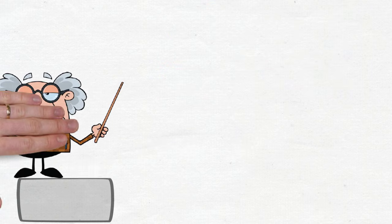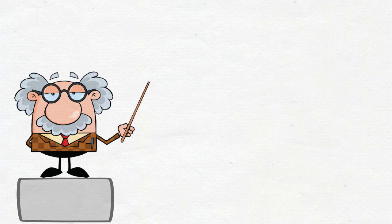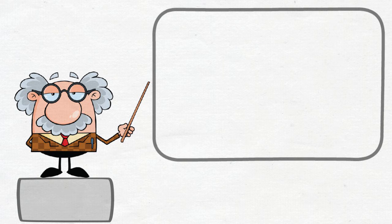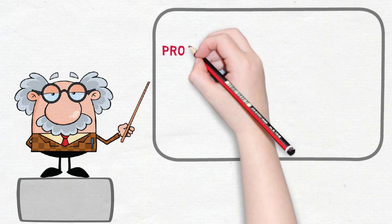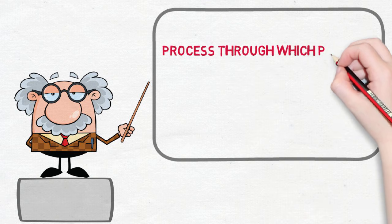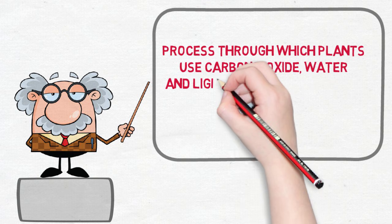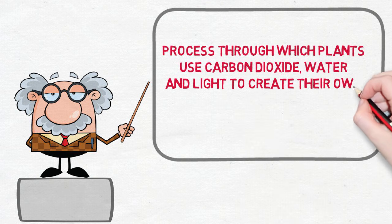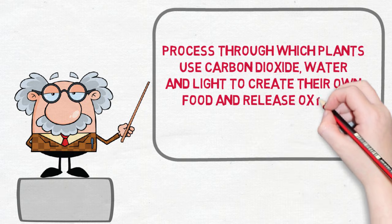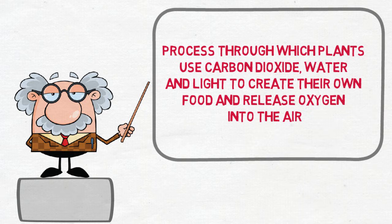If you have understood things so far, then the definition of photosynthesis should be easy. Here it is. Photosynthesis is the process through which plants use water, light, and carbon dioxide to create their food and release oxygen into the air.